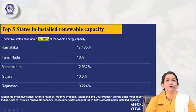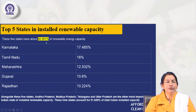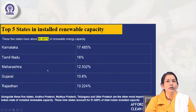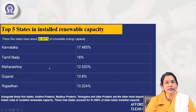The top 5 states that have installed renewable energy capacity and acted on creating, using, and managing it account for about 66.99 percent of India's renewable energy capacity. Karnataka leads at 17.449 percent, followed by Tamil Nadu at 16 percent, Maharashtra at 12.53 percent, Gujarat at 10.6 percent, and Rajasthan at 10.2 percent. These 5 states have made advanced progress in renewable energy capacity building and management.